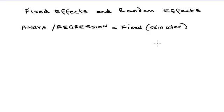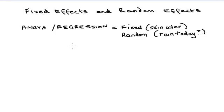They're either fixed like skin color or random like weather on a particular day. This definition is the main focus of this video. Alternatively, it can mean the process of fixing random variables as in fixed effects regression.